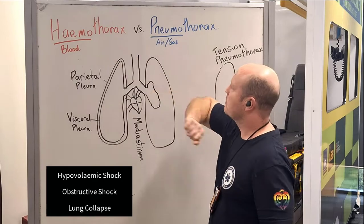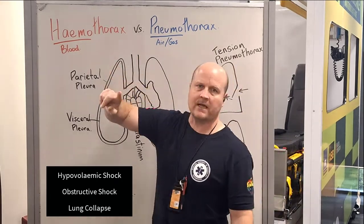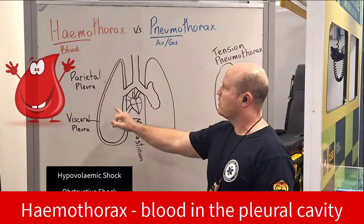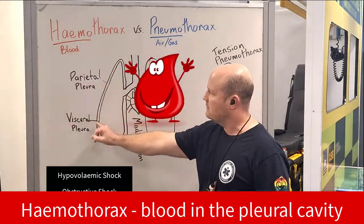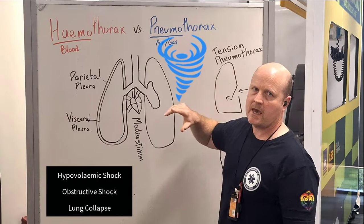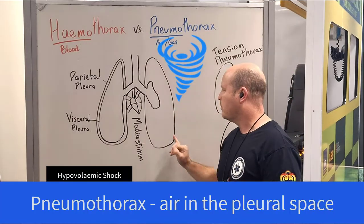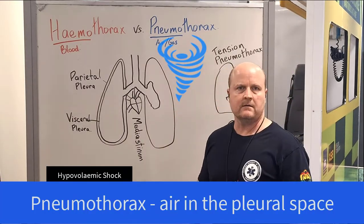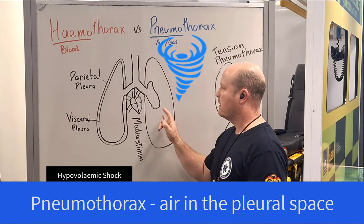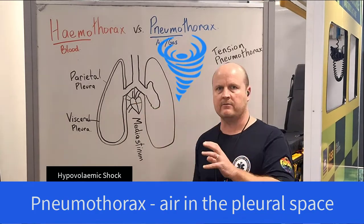With a haemothorax and a pneumothorax: heme means blood, so this is blood in the pleural cavity, and pneumo means air or gas, so this is when there's air in the pleural cavity. If this happens, it's going to increase the pressure and cause that lung to collapse if it gets big enough.